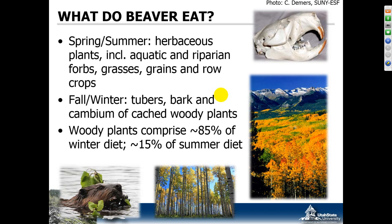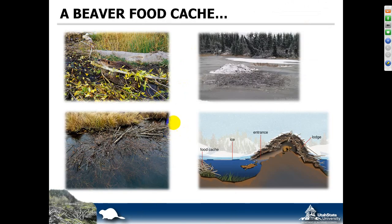In the spring and summer, they harvest a whole variety of herbaceous plants, forbs, grasses, grain, and row crops if they're around. Their diet in the summer may be as much as 85 percent just regular vegetation as opposed to woody plants. In the fall and winter, they harvest woody material and eat the cambium off of the bark. They can bury branches in the bottom of a pond in a food cache, and they then have access to that through the winter, even if there's ice cover.